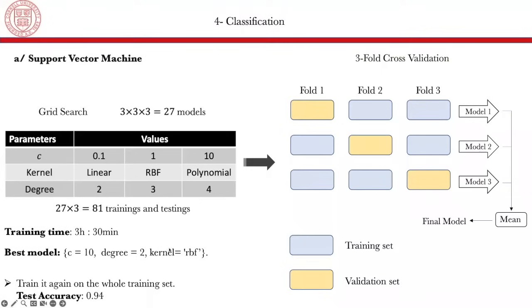And the best model at the end is the model that has C equals to 10, degree equal to two, and kernel RBF. And then we take this best model and train it again, but this time on the whole training set. So we take this model and train it on fold one, two, and three, and then we get our final fit. And when we test our model in the test set, we get the accuracy of 0.94, which is a very good result, actually.